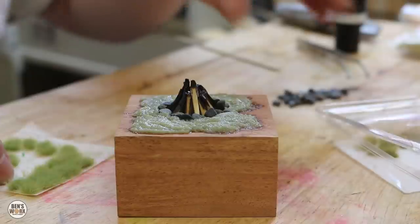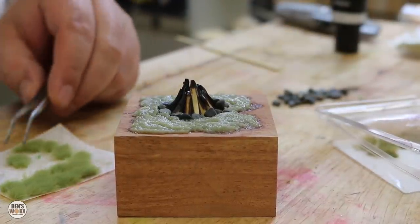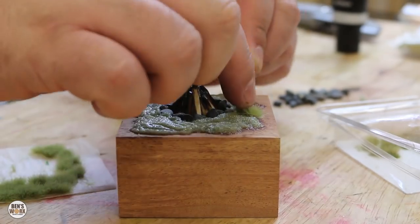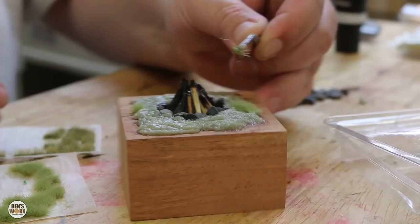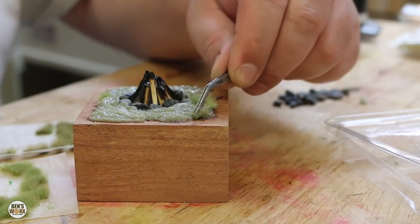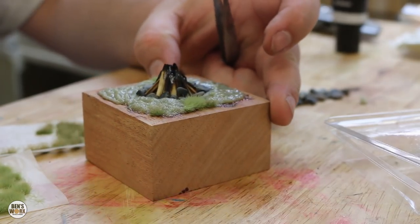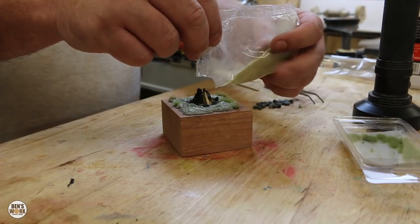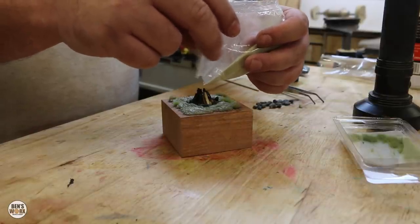Now it's time to add some tufts of grass. I've got these ones from the local hobby store. I'm just going to sprinkle some extra sand over the top, just to fill in the little gaps between the pieces of wood.